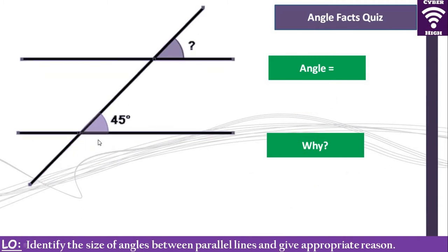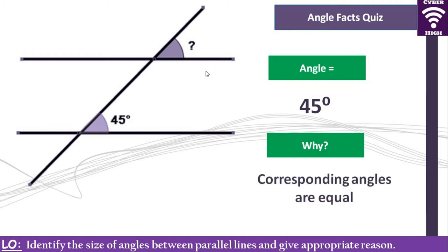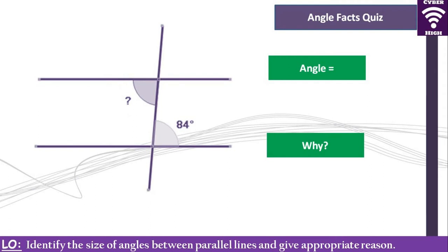What is the size of that angle with the question mark? It is 45 degrees. Why do we say 45 degrees? It is because they are corresponding angles. The other name for corresponding angles is F angles — these angles are formed in a shape that looks like an F, which is why they are called F angles.